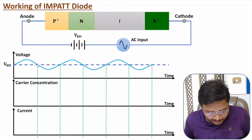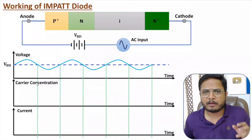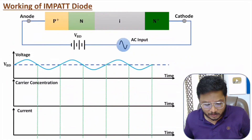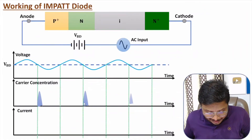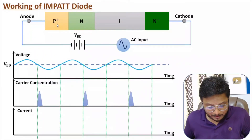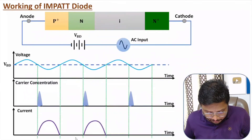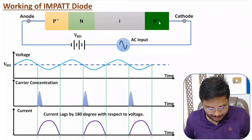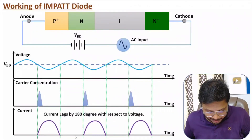When breakdown happens, huge carrier concentration is generated due to charge carrier multiplication. This carrier concentration then drifts — electrons toward n+ and holes toward p+ — causing current to flow. Observing the current flow, current lags by 180 degrees with respect to voltage.